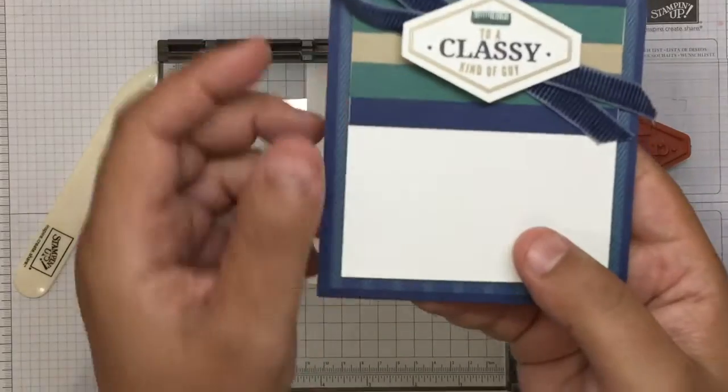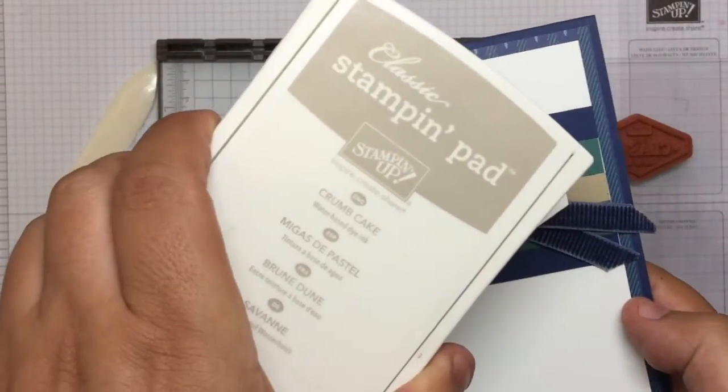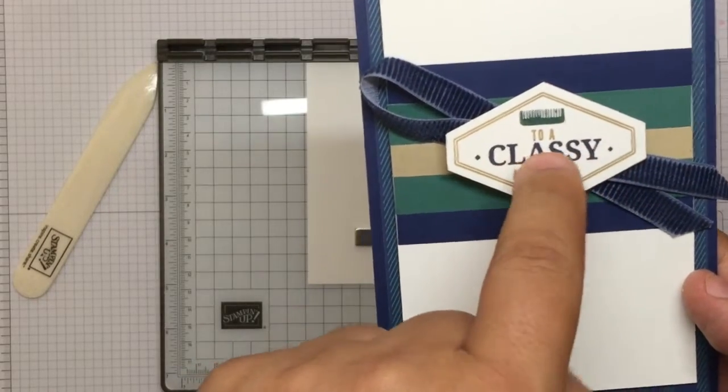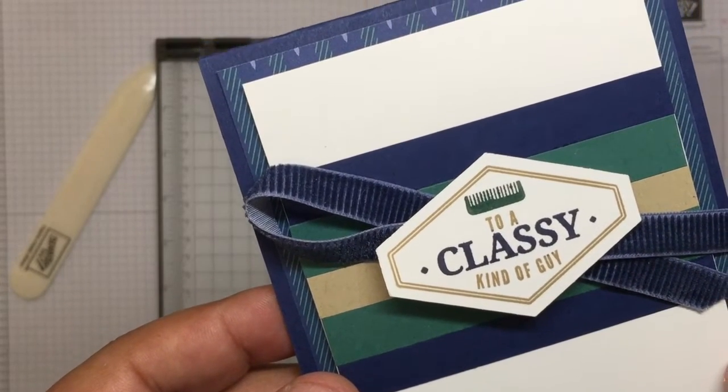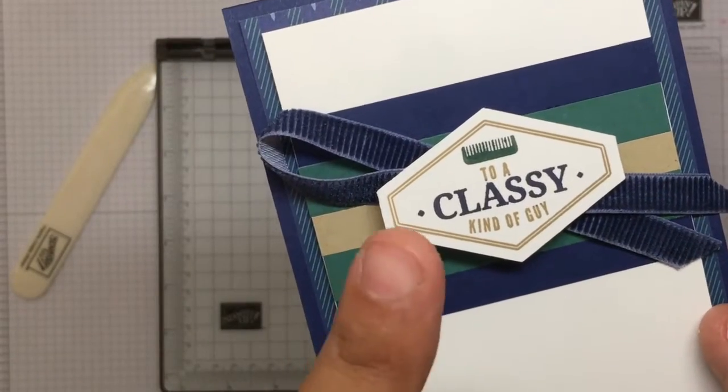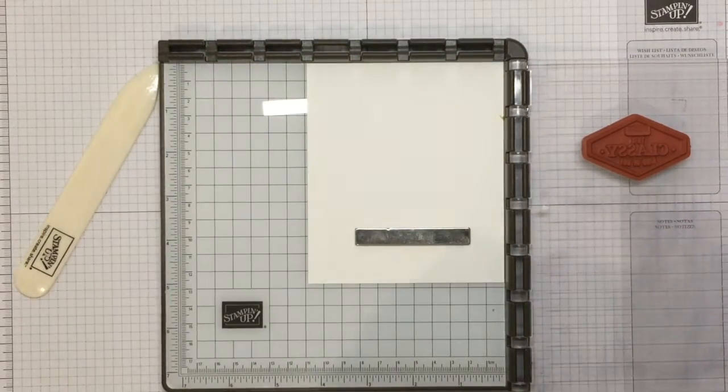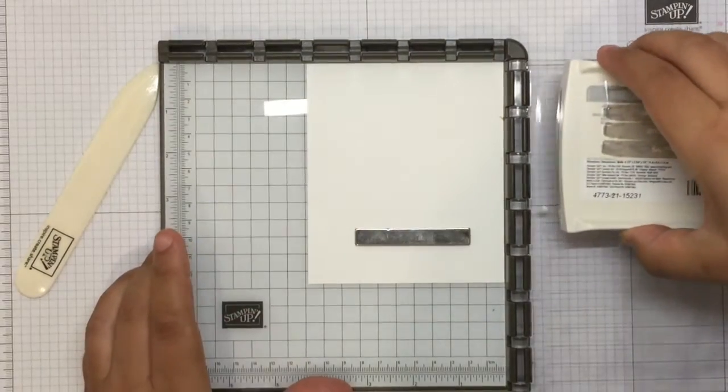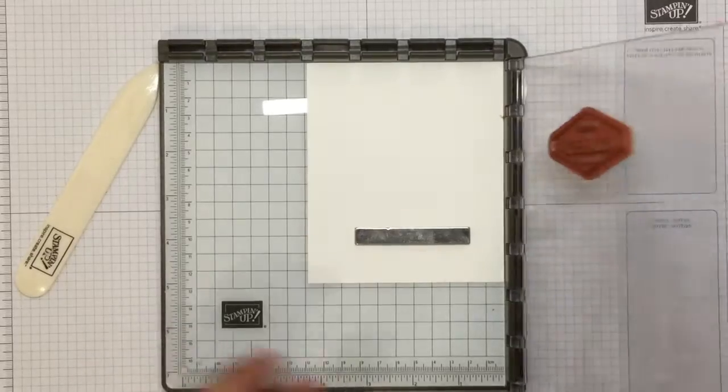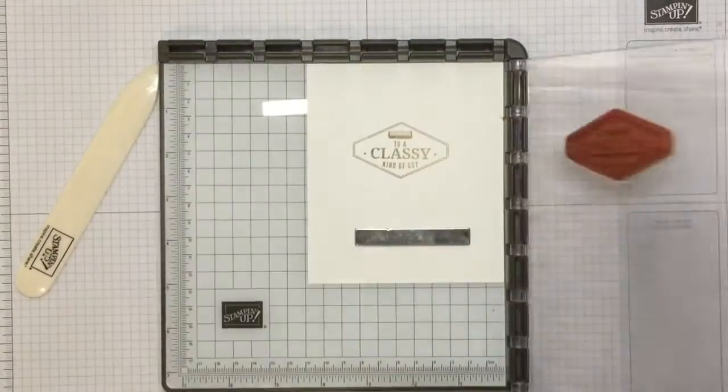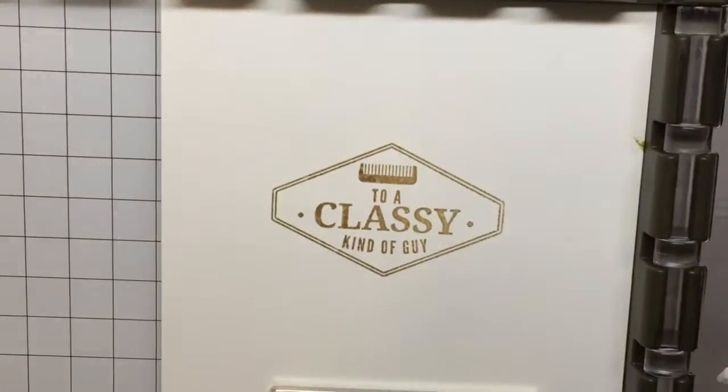So I'll pick up the stamp. Now let's just have a look at the original version. So see how the outside is in Sahara Sand, not Sahara Sand, it's in Crumb Cake. This part here is in Night of Navy and this part here, which you can see a bit better now, that is in Tranquil Tide. So there's lots of ways that you can do that, but I'm going to show you how I did it using the Stamparatus. So what I'm first going to do is stamp the whole image in Crumb Cake. Yep, that's about right. Now you can probably see that from there. I'll bring it up a bit higher.